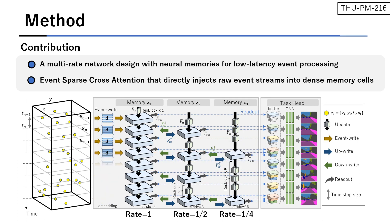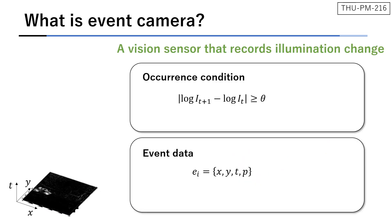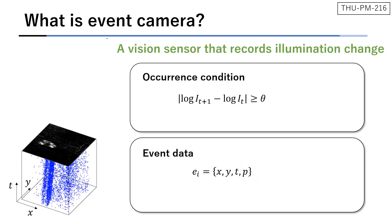To avoid conventional lossy conversion from events to frames, we directly inject raw event streams into dense memory cells using attention with an event gating mechanism. From here, this video explains our work in more detail.